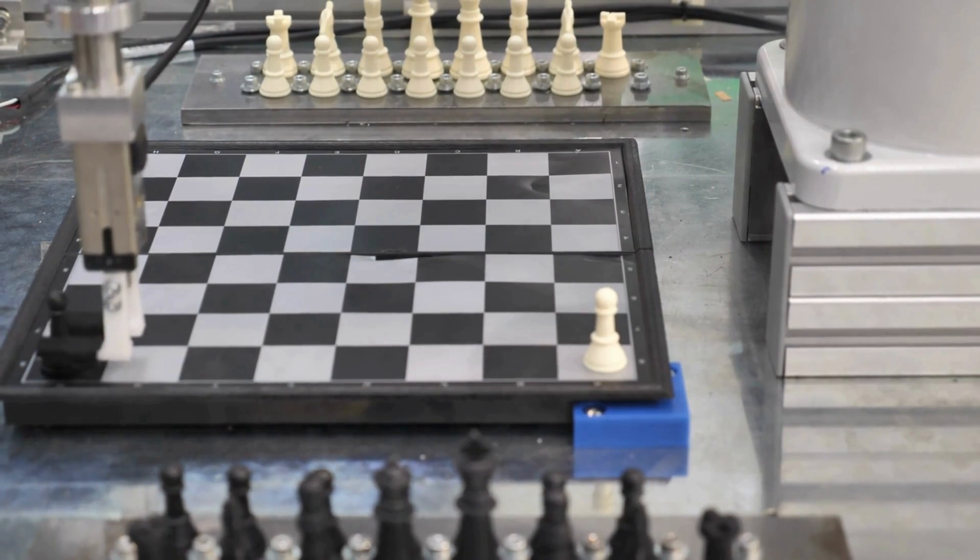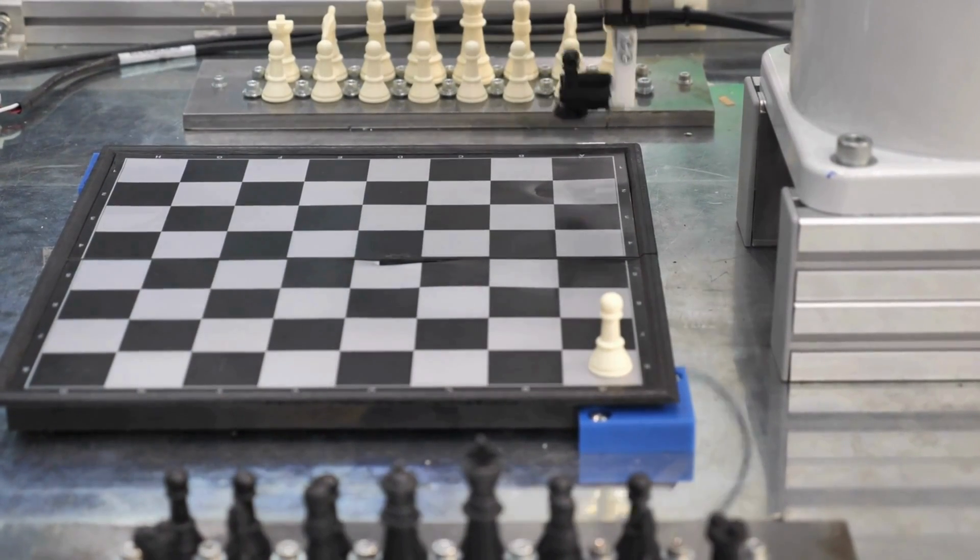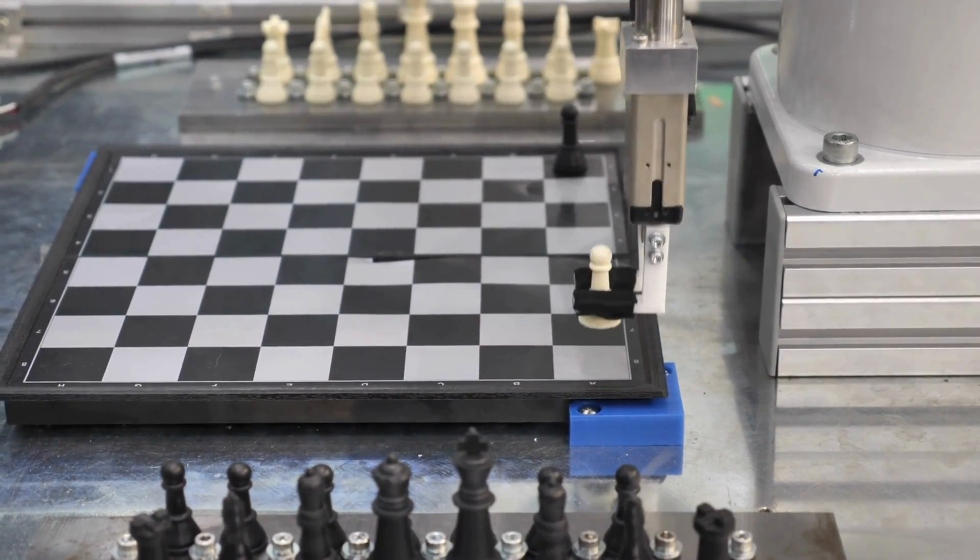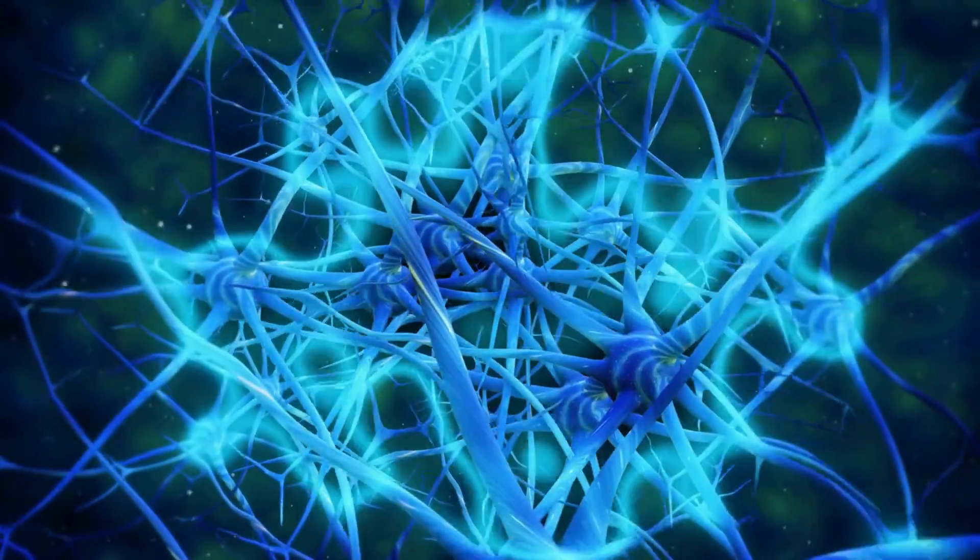One of the earliest known examples of AI was a simple chess playing program developed in the 1950s by British computer scientist and mathematician Alan Turing. In the years since then, AI has evolved to become increasingly complex and capable.